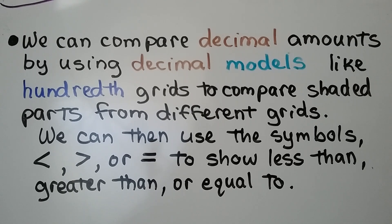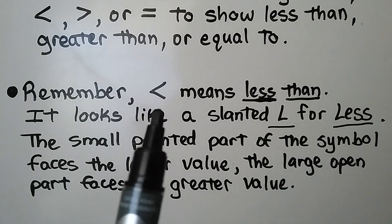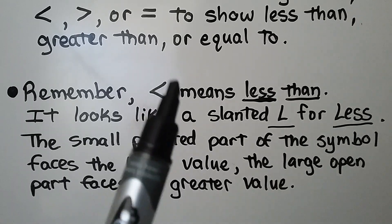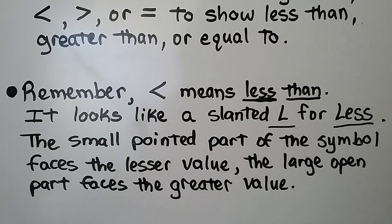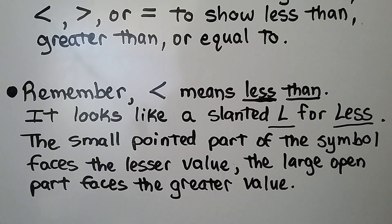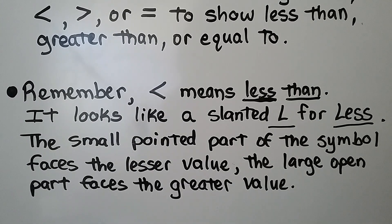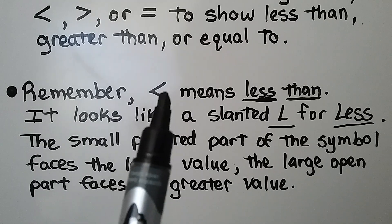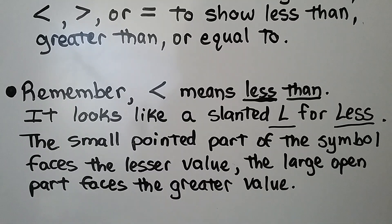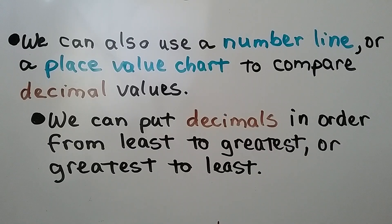Remember, the less than symbol kind of looks like a slanted L for 'less.' The small pointed part of the symbol faces the lesser value and the large open part faces the greater value. Some teachers say the big mouth eats the bigger number. We can also use a number line or a place value chart to compare decimal values.